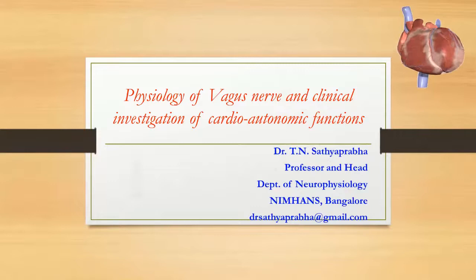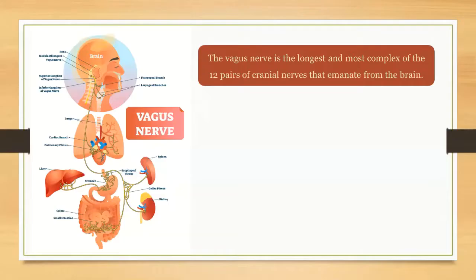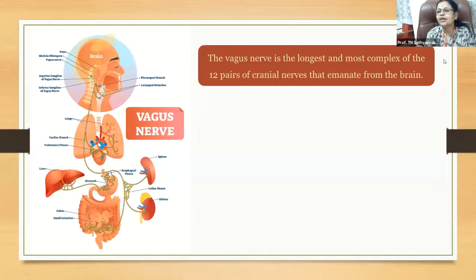I'll be talking on the physiology of the vagus nerve and clinical investigation of cardiac autonomic functions. In the first few slides I'll be talking on vagus nerve anatomy and physiology, then I'll go on to how we do the autonomic functional tests.